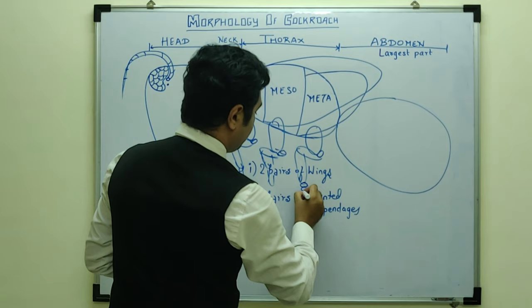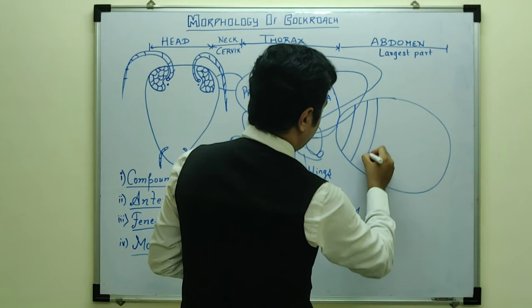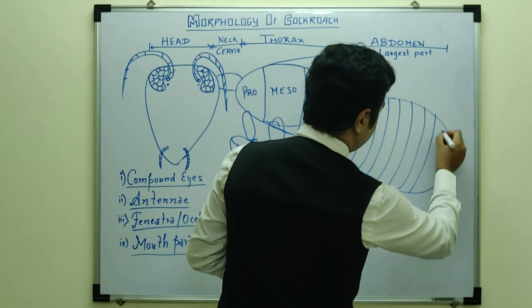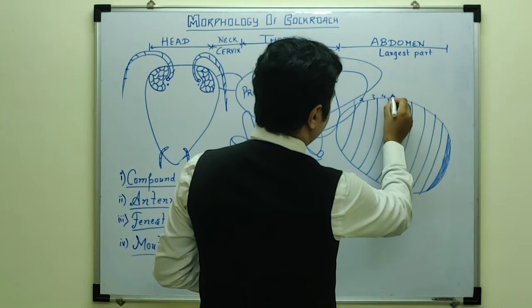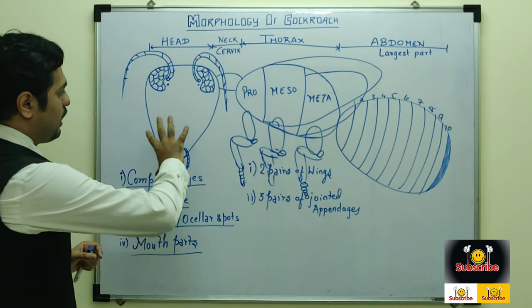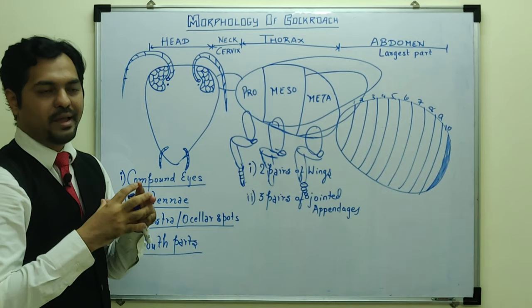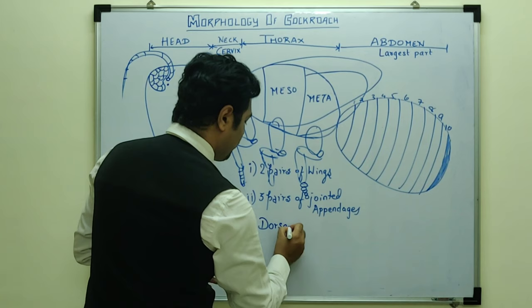In the abdomen, there are segments. There are ten visible segments because the 11th segment gets fused with the 10th. So the first through ninth segments are distinct, and the tenth segment has been fused with the eleventh segment. This gives ten visible segments in the abdomen.